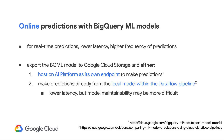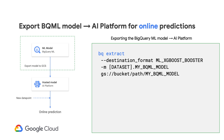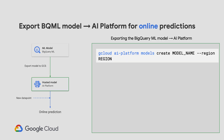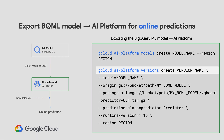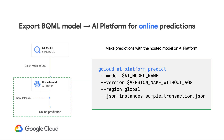How does hosting on AI Platform work? You can do it via two steps. Step one: export the model to a Cloud Storage location by running the bq extract command with the model name and destination location as arguments. Step two: once it's in Cloud Storage, create a model on AI Platform which can hold one or more versions. Create a model version by running the gcloud ai-platform versions create command, providing the GCS location of the previously exported model. To make predictions, send a request using the gcloud ai-platform predict command by passing in the transaction data.